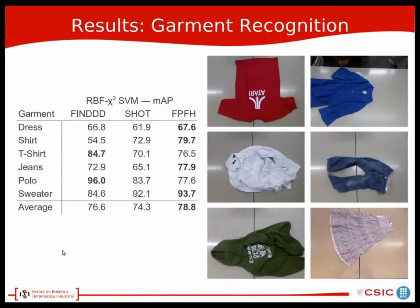The next results are for garment recognition. We had a dataset with six types of objects: shirts, polo shirts, jeans, hoodies, sweaters with hoods, and dresses. We conducted an experiment similar to the Pascal Visual Object Challenge, training a nonlinear chi-square SVM classifier for each category and computing the mean average precision on a test set. The performance of FIND is very similar to the other 3D descriptors that are much more expensive to compute, and in some categories it even manages to outperform them.